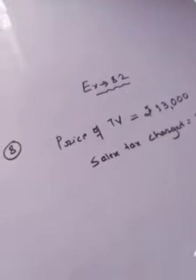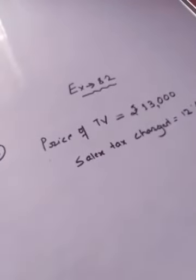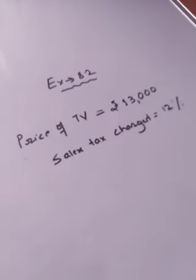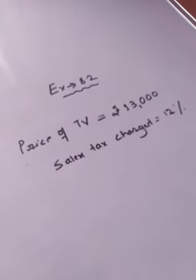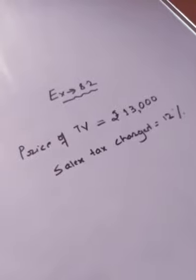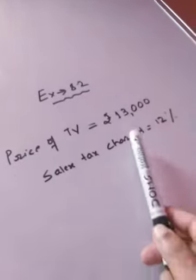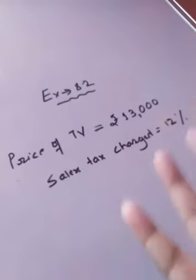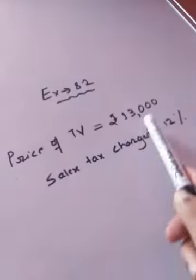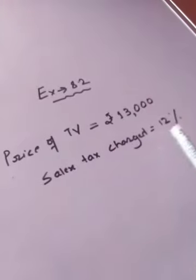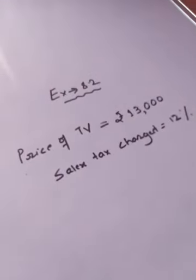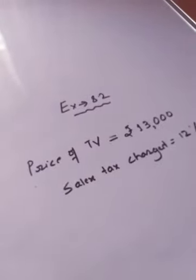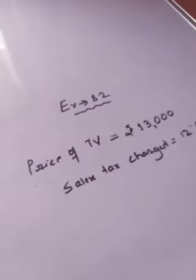This is very very easy. In question 8, the price of a TV is given as 13,000. The sales tax charged on it is 12%. Now the final question they are asking: find the amount that Vinod will have to pay if he buys it.